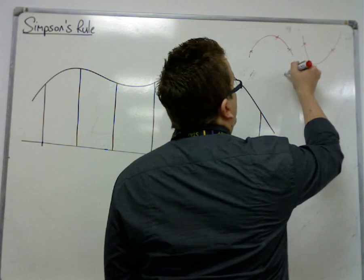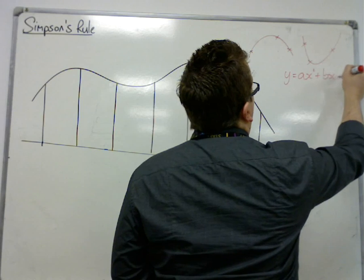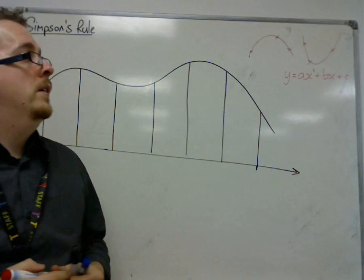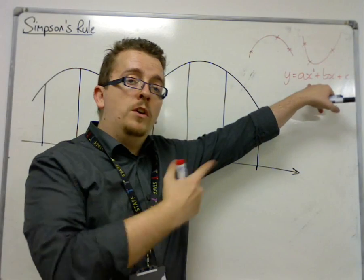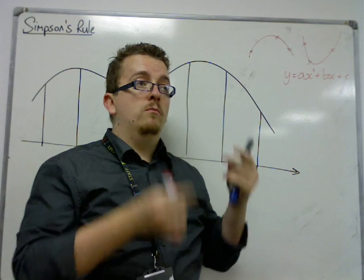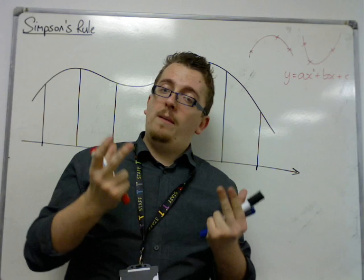If you have three points, you can find the exact parabola that goes through those three points. That's why there are three unknowns, A, B, and C, when you write down the general equation of a quadratic, of a parabola. Three unknowns, the three points can give you those. That gives you the specific parabola.